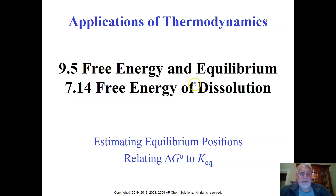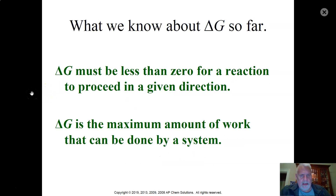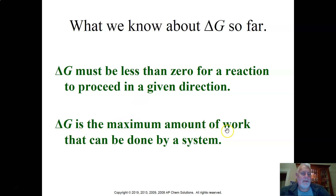So: free energy and equilibrium — and then we're going to get into something called dissolution. You can see the word 'solution' in there, so it probably has something to do with that. We're going to be relating delta G at standard conditions to equilibrium. First of all, two very important summaries of what we talked about with free energy: delta G must be less than zero for a reaction to proceed in a given direction — circle or highlight that.